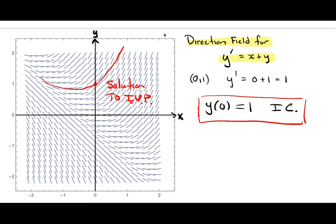By choosing different points in the plane, if you had a different initial condition, you get a different behavior of the solution. If I picked my initial condition down here, this solution also increases but looks like it would approach something. Depending on where you pick your initial condition, you get a different solution. But the direction field tells you how that solution is going to behave once you choose your initial condition.